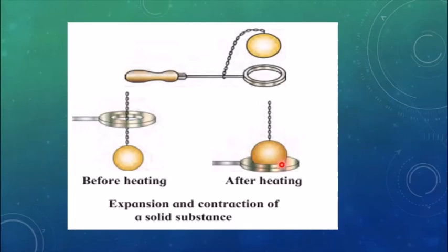After heating, the ball does not pass through the ring because it has expanded. From this we conclude that metals expand on heating. When you cool the metal, it will again pass through the ring — metals expand on heating and contract on cooling. Solids expand due to heat and return to their original state when heat is removed, but the extent of expansion depends on the metal — iron and aluminum expand differently.